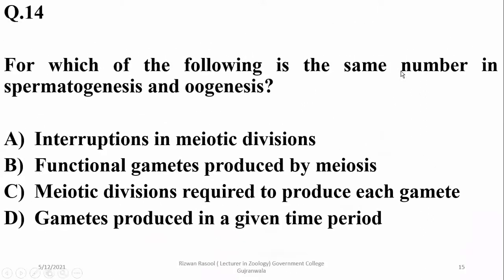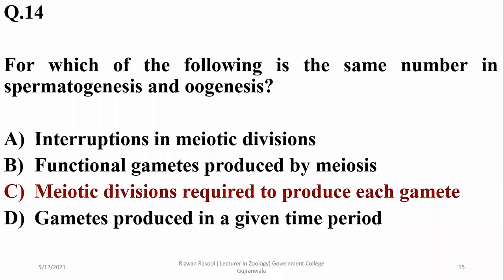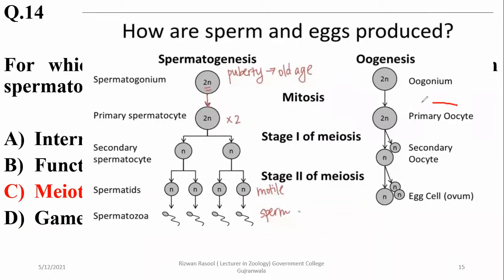Question number fourteen: for which of the following is the number the same in spermatogenesis and oogenesis? Interruptions are more in oogenesis compared to spermatogenesis. Functional gametes are produced by meiosis in both cases. The number of functional gametes varies — more sperms are produced in spermatogenesis, while oogenesis produces one gamete at a time. However, meiotic divisions required to produce each gamete are the same — meiosis one and meiosis two — so option C is the right answer, as both always require two divisions.